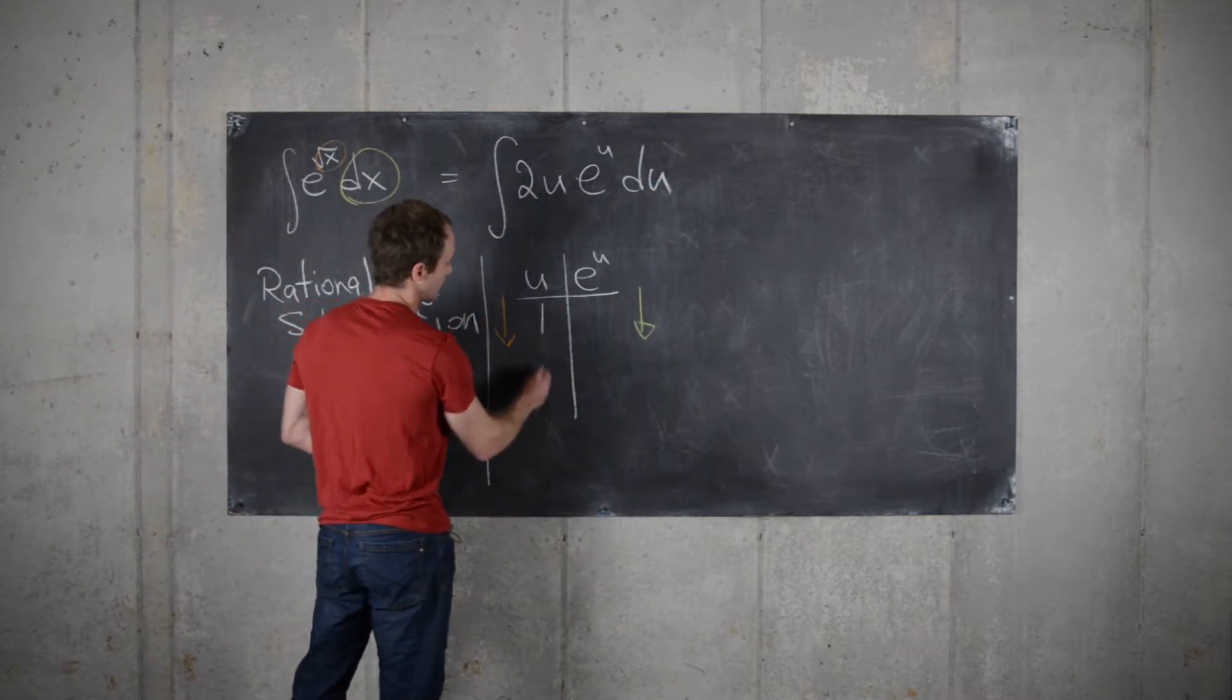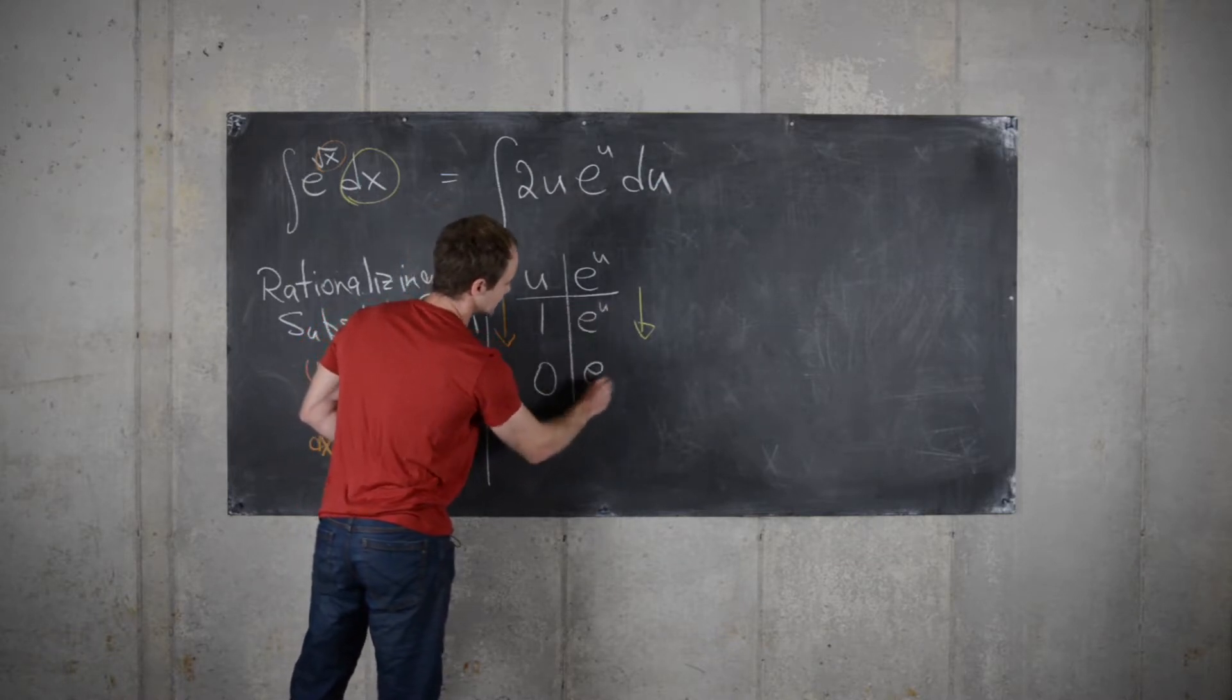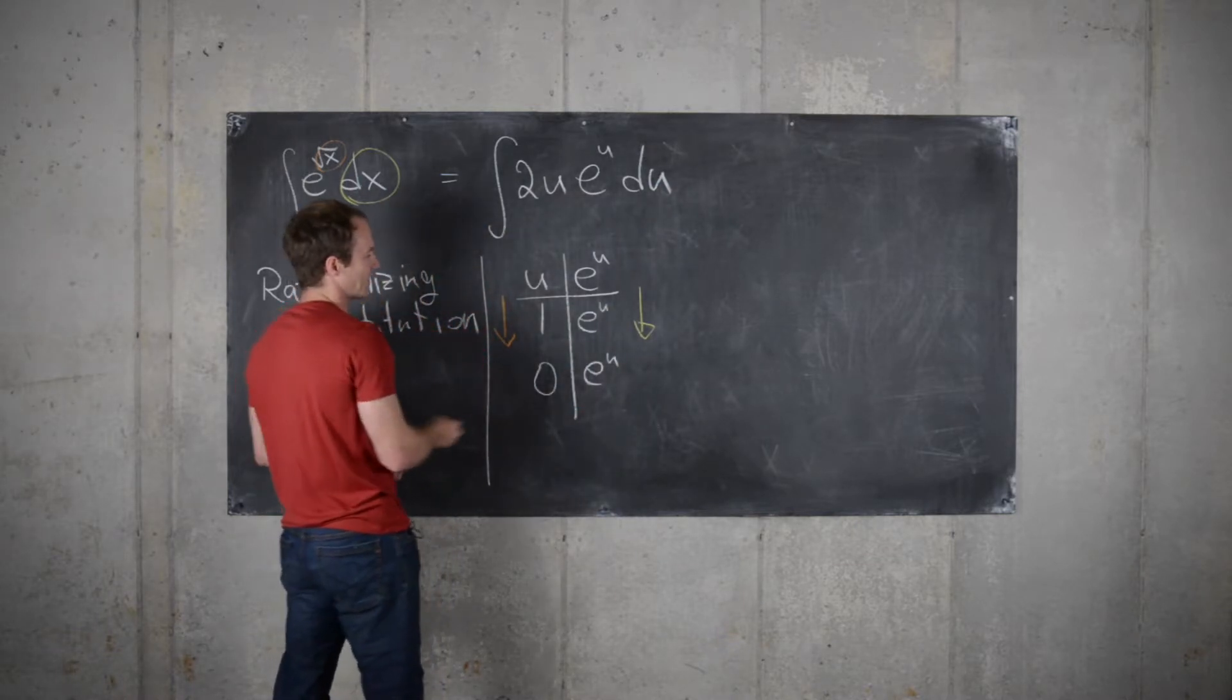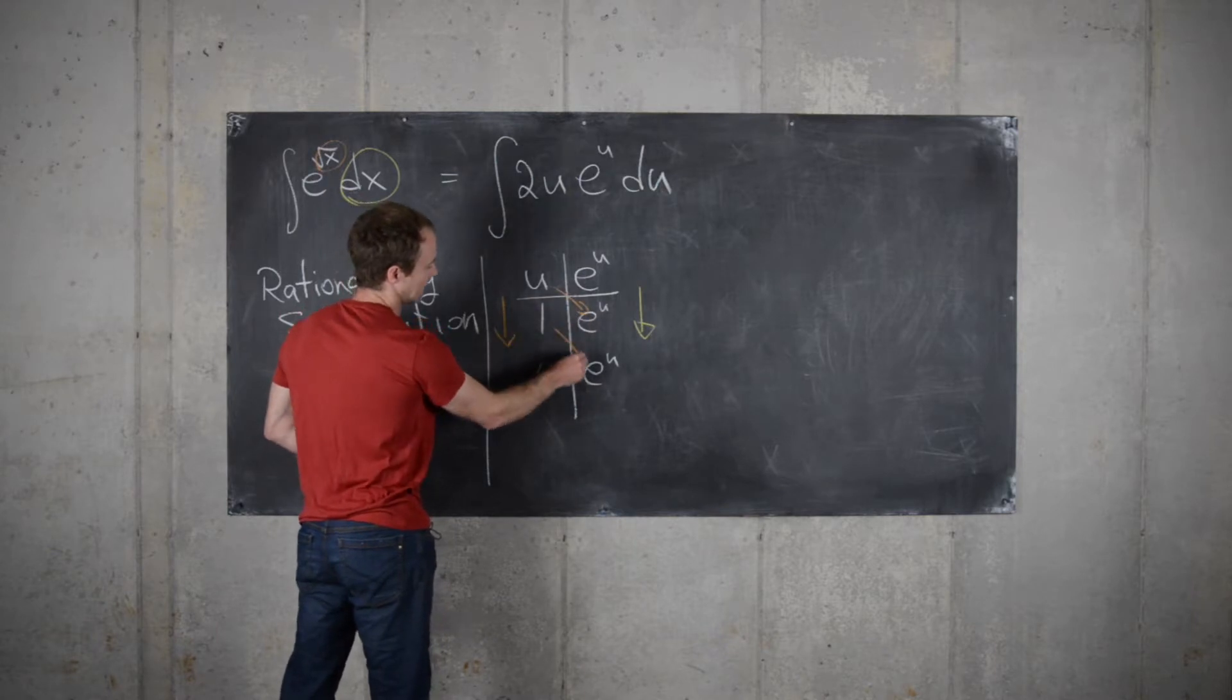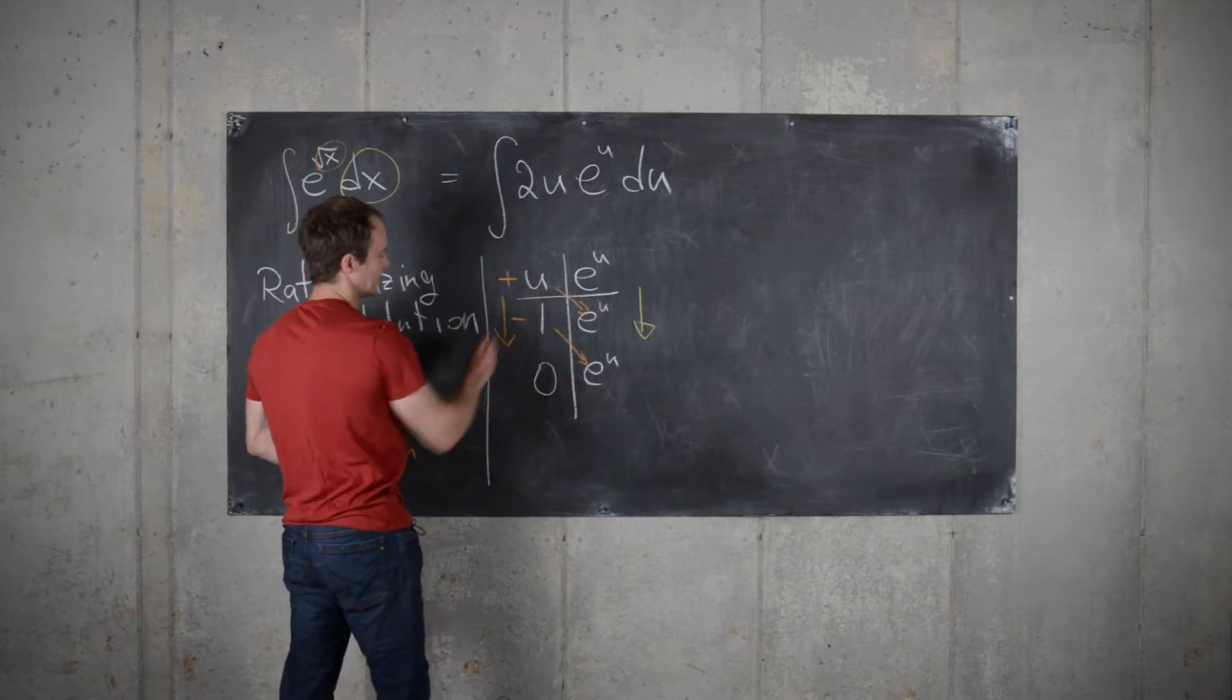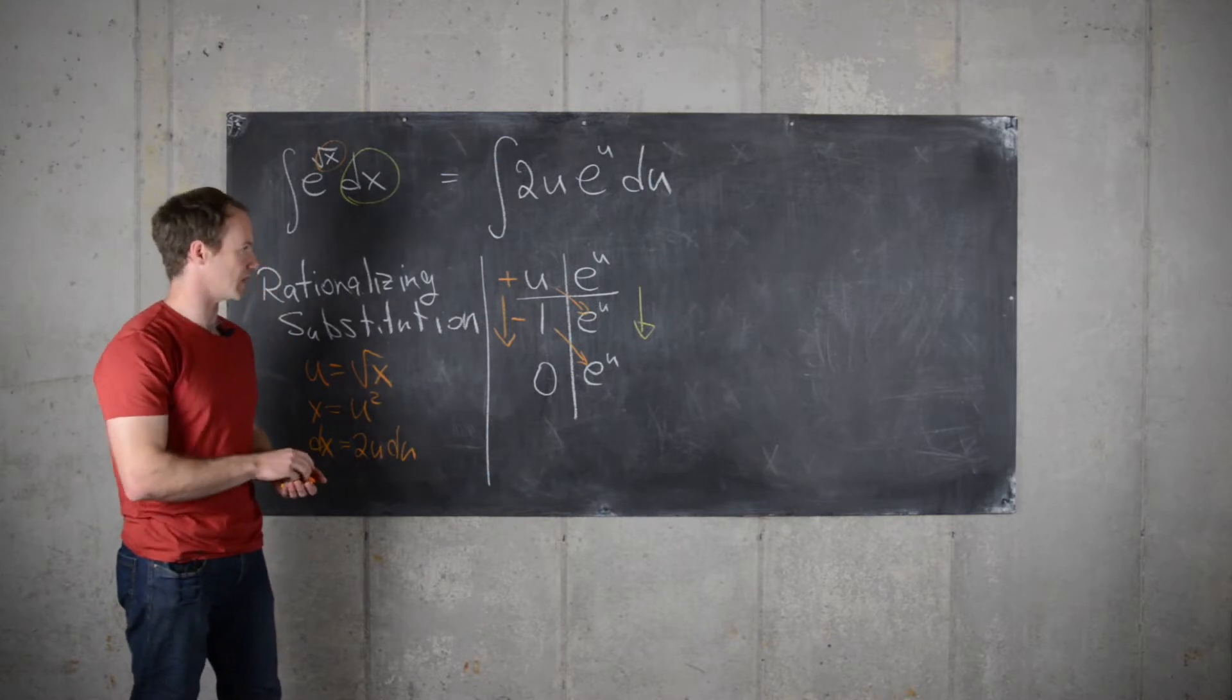So, here we'll get 1, 0, e to the u, e to the u, and then we'll match up our columns on the diagonal, alternating the signs. This is just a quick way to do integration by parts.